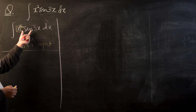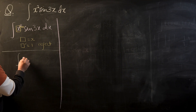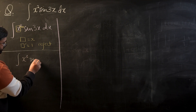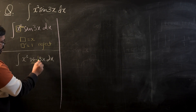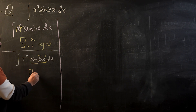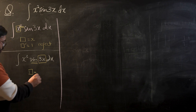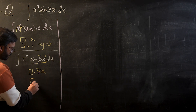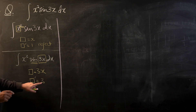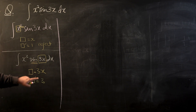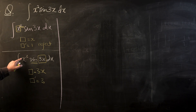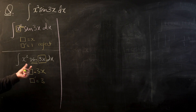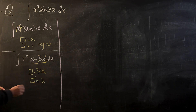Moving on to the second operator — sine. If I take sine as the operator, then 3x is my inner function. I would want only the differentiation of the box to be present outside the operator. The differentiation of 3x is 3, so we would need only 3 outside. I can introduce 3 there, but I cannot get rid of x squared. Since I cannot make only the differentiation of the box present outside the operator, this operator is also rejected.